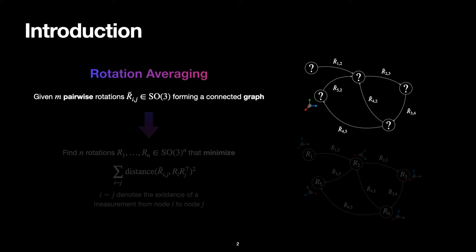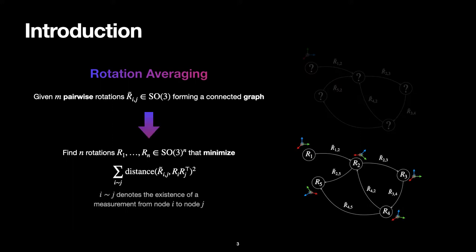Given m pairwise rotations R̃ij, parameterized as 3x3 matrices in the special orthogonal group SO(3) forming the edges of a connected graph as represented on the right, the goal is to find n rotations R1 to Rn which minimize a sum of squared errors between edges and nodes for a specific distance function.